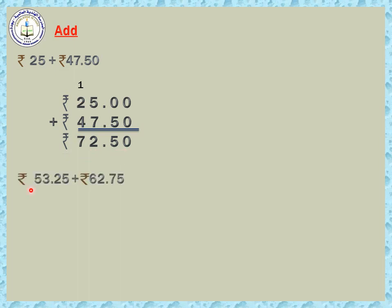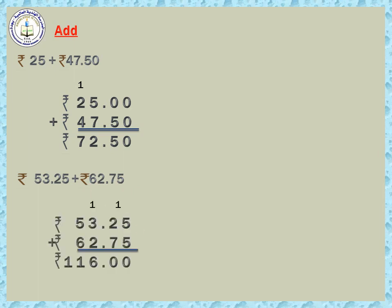Next question: rupees 53.25 plus rupees 62 and 75 Paise. Arrange like this. 5 plus 5 is 10 — write 0, carry 1. 1 plus 2 is 3, 3 plus 7 is 10 — write 0, carry 1. Put the point. 3 plus 2 is 5, 5 plus 1 is 6, 5 plus 6 is 11. So the answer is rupees 116.